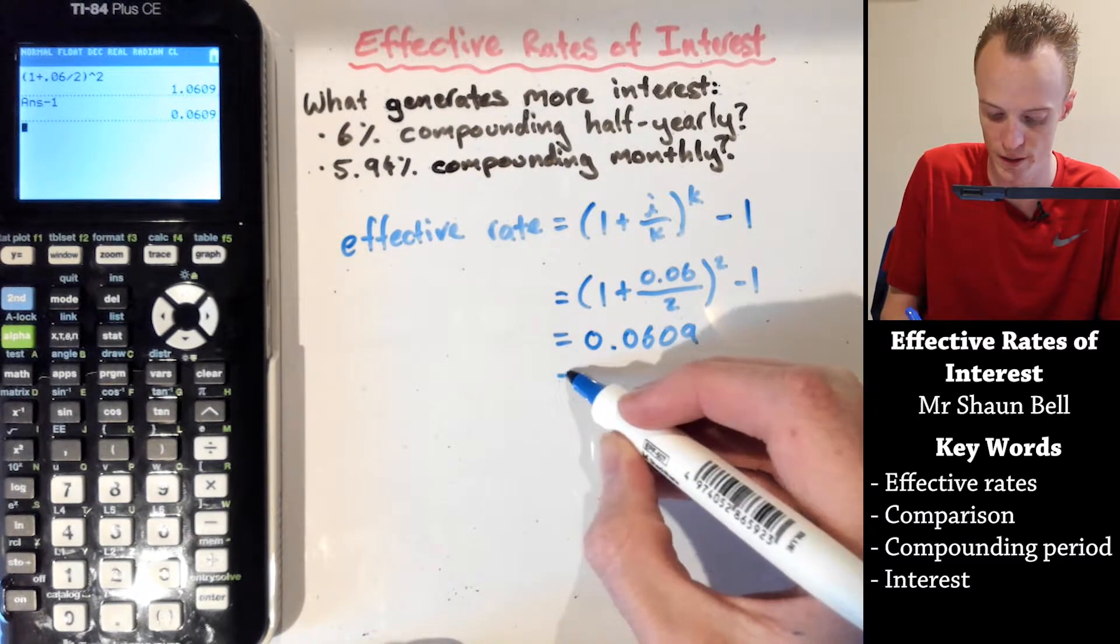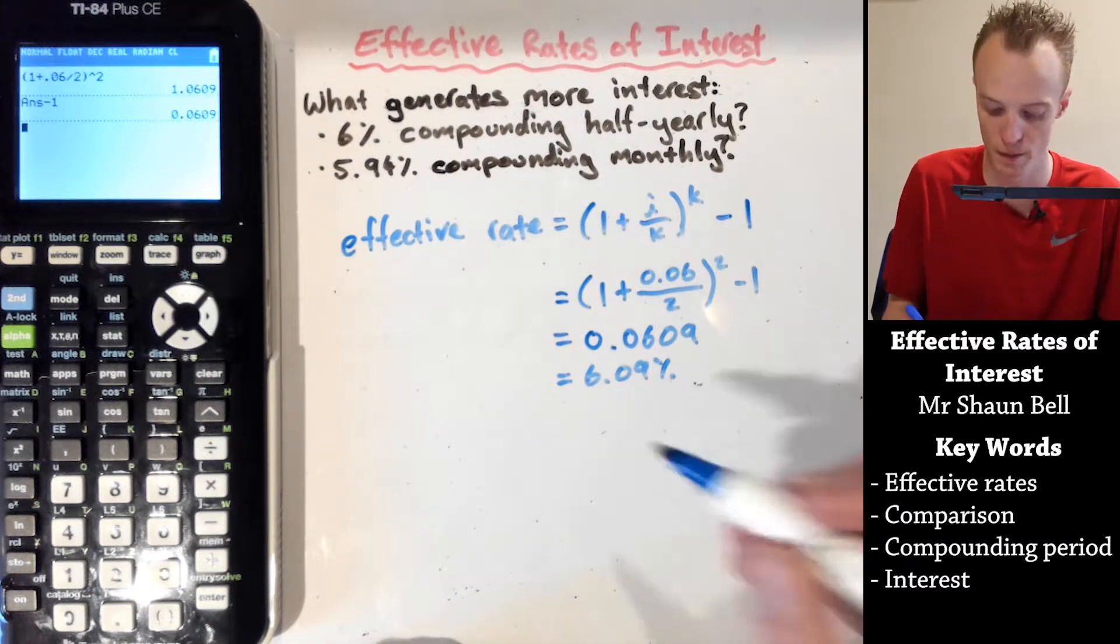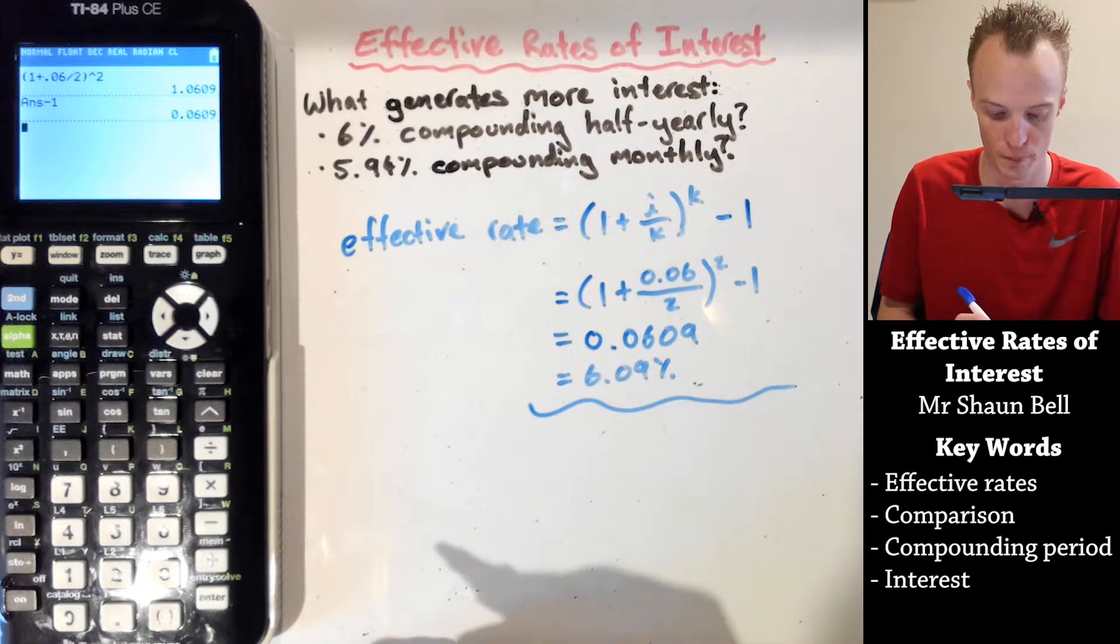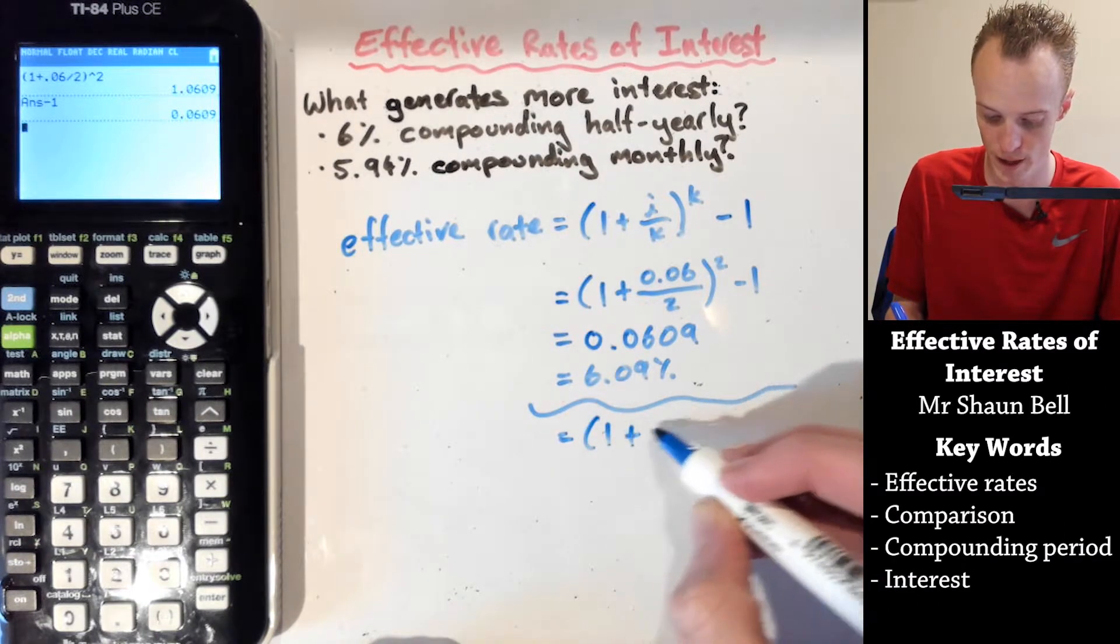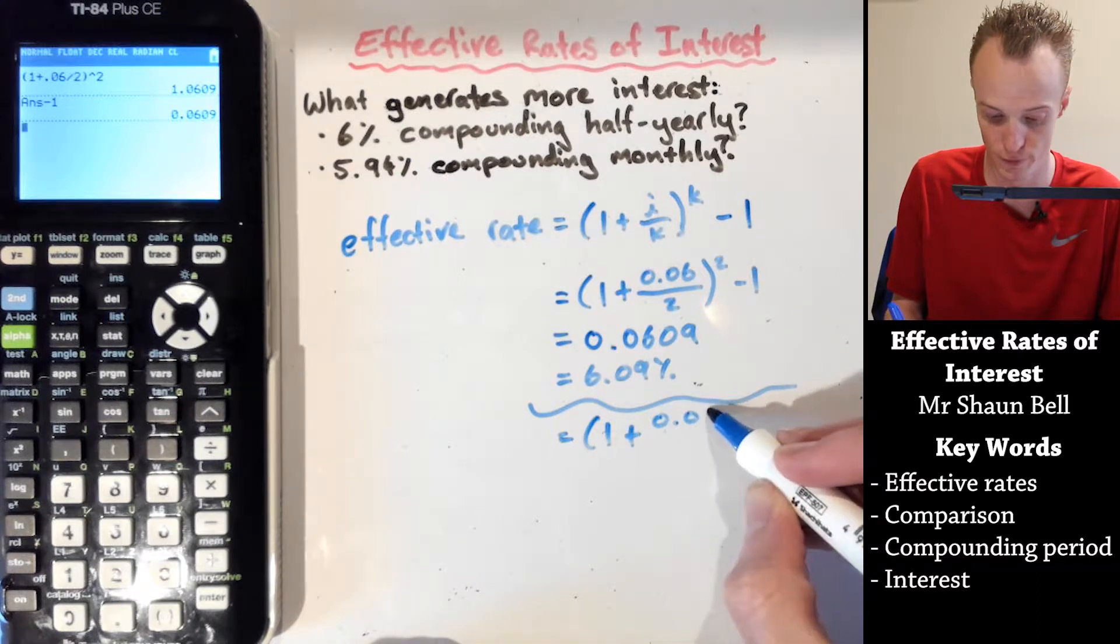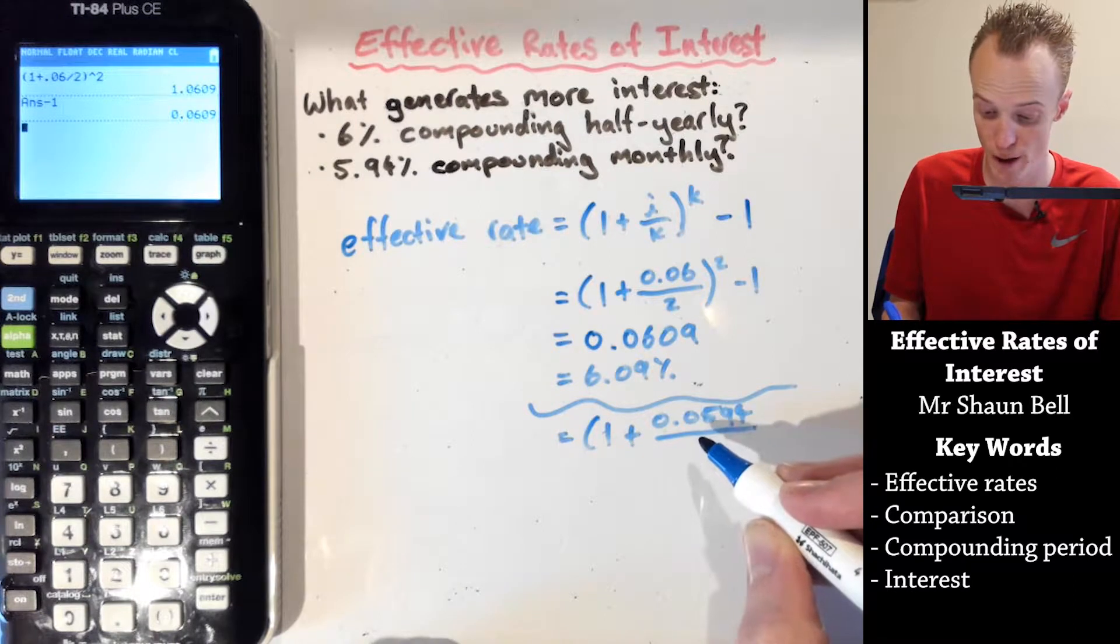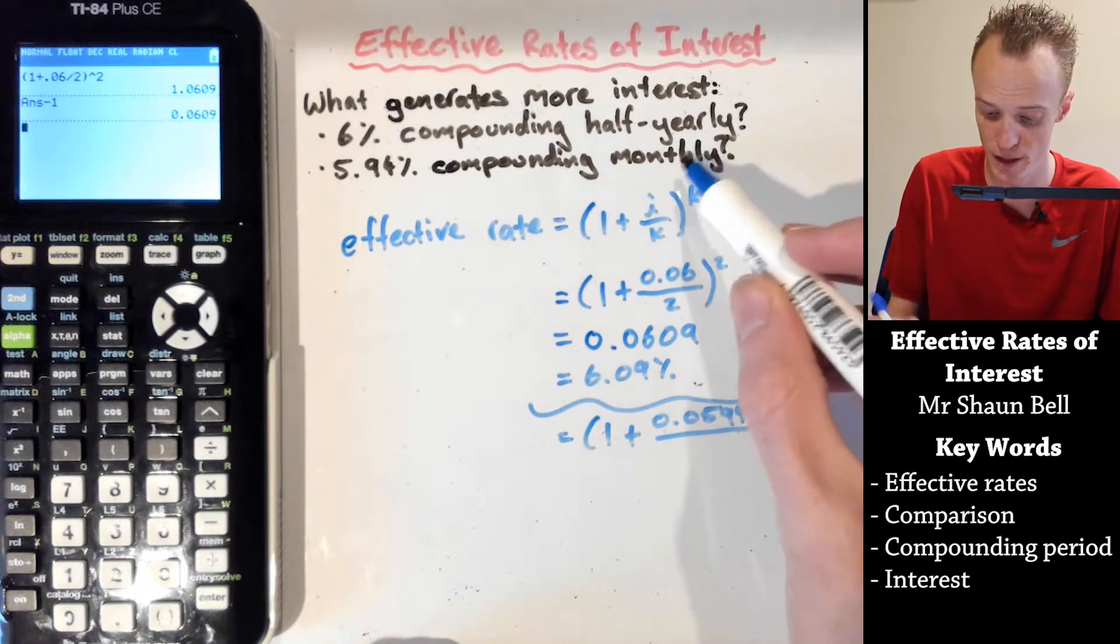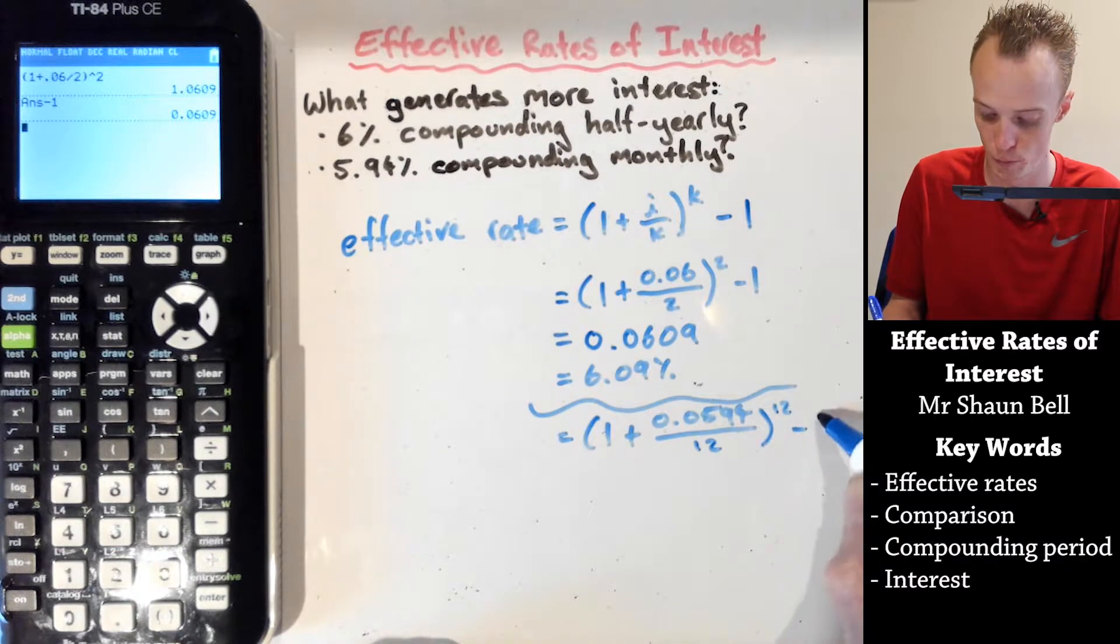In comparison to the 5.94, this would be equal to 1 plus 0.0594, divided by the number of compounding periods per year, so 12, to the power of 12, subtract 1.